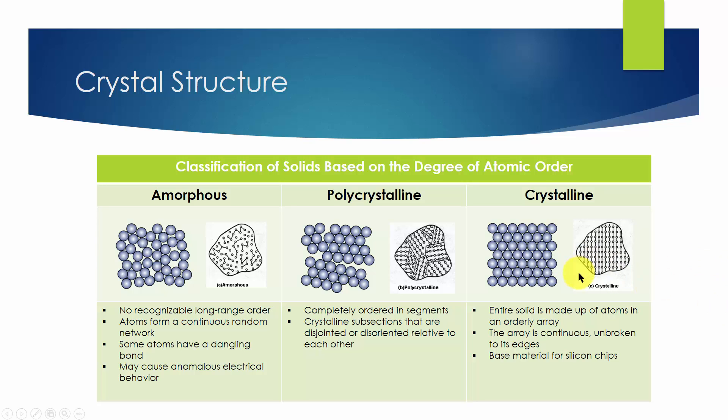Polycrystalline materials are also called multicrystalline or polycrystals. They are solids that are composed of many crystallites of varying size and orientation. Crystallites are also referred to as grains.